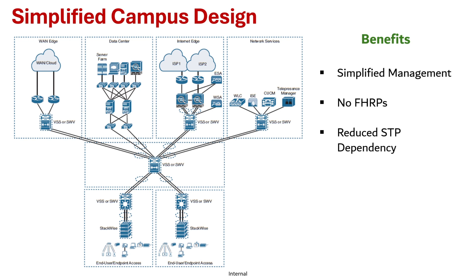EtherChannel minimizes the need for spanning tree protocols, though STP is still there as a safety net. Since all uplinks are active, it increases your bandwidth and gives you better performance. The network looks like a hub-and-spoke design, so it's less complex and easier to troubleshoot.